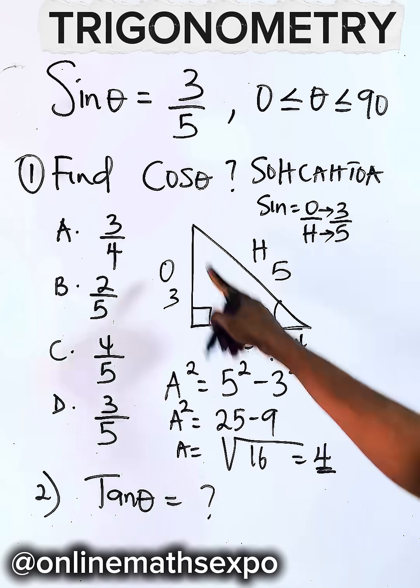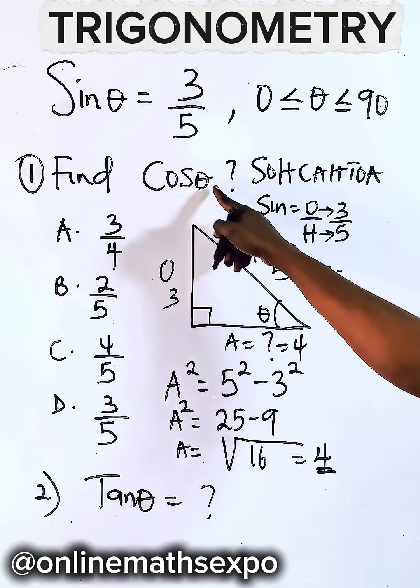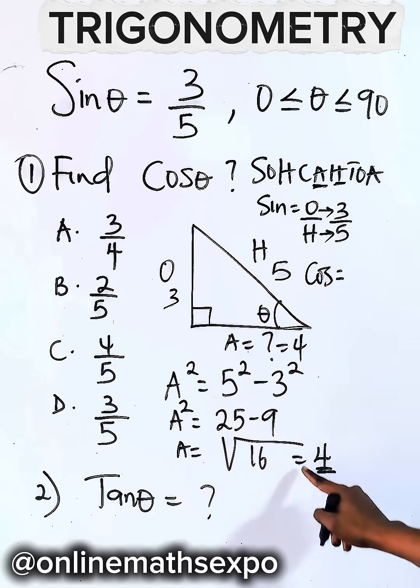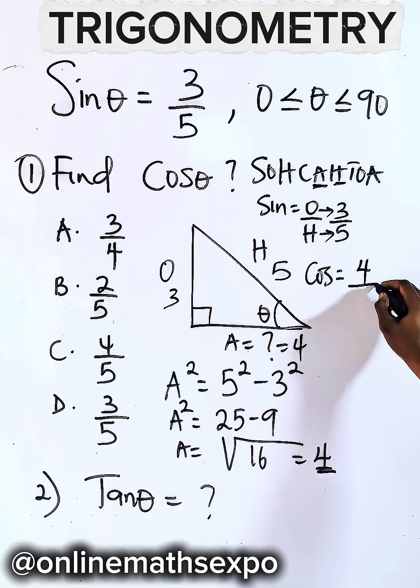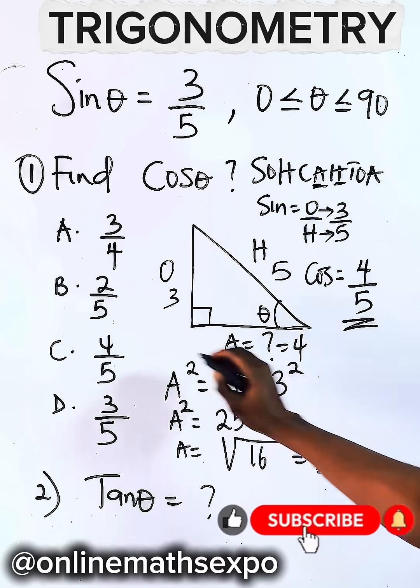So here is 4. To find our cosine, our cosine will be adjacent side over hypotenuse. So adjacent is giving us 4 and our hypotenuse is giving us 5, and that is option C.